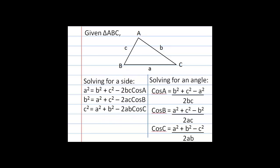Going back to our formulas, we now have a formula to solve for a missing angle. Just like with the sides, we can write a similar formula for cosine of B or cosine of C using the same pattern.